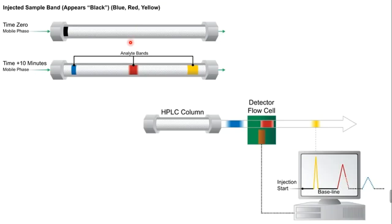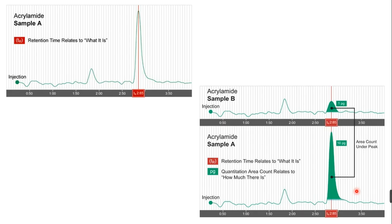Different bands are separated over time in HPLC. As each band exits the column, it passes through the flow cell — which is like a miniature UV-visible spectrophotometer. Based on the peak area, the software calculates how much quantity of solute is present. For example, one peak may give 1 picogram of solute; another sample may give 10 picograms, shown by a taller peak.